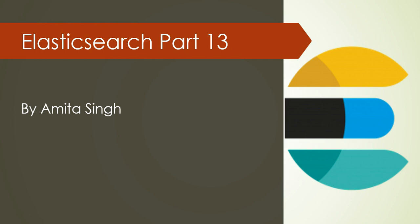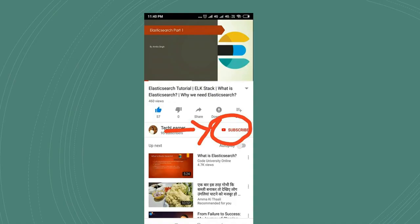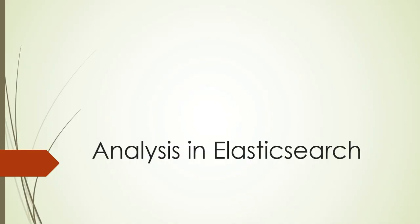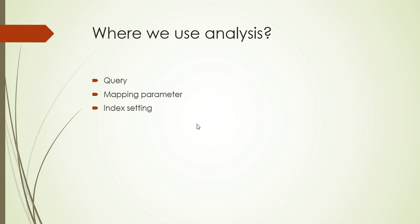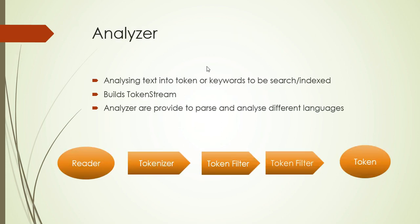Hello, welcome to my channel. My name is Amita Singh and this is part 13 of Elasticsearch. If you are new to my channel, please subscribe and press the bell icon to get notifications. In today's session I'll be talking about the types of analyzers in Elasticsearch. In the previous session I covered the analysis part - what is an analyzer, tokenizer, token filter, and character filter.